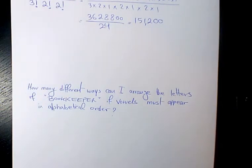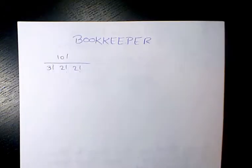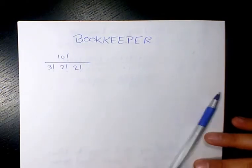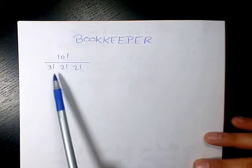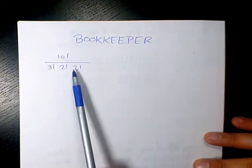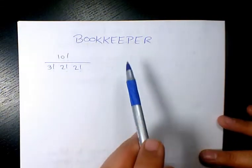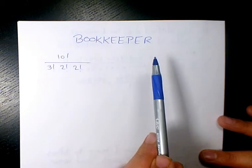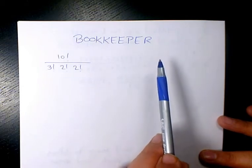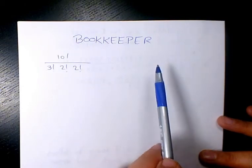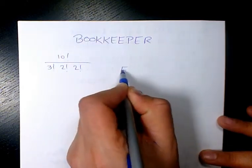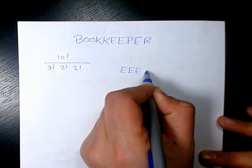Now in the second part it says: how many different ways can I arrange the letters of bookkeeper if the vowels must appear in alphabetical order? So if there is no restriction we have 10 factorial divided by 3 factorial, 2 factorial, and 2 factorial different ways. Now for the second question, the vowels need to be in alphabetical order, which is going to be E, E, E, and O, O.